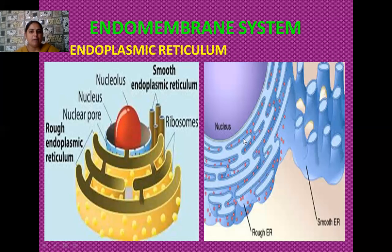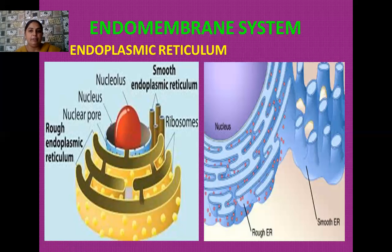Two compartments are formed within the endoplasmic reticulum. The first is inside the tubular part, known as the luminal compartment. Between two tubular structures of the endoplasmic reticulum, a space is present containing the cytoplasm — this space outside the tubules within the cytoplasm constitutes the extra-luminal compartment. So the endoplasmic reticulum has two compartments: the luminal compartment inside the tubules, and the extra-luminal compartment outside.